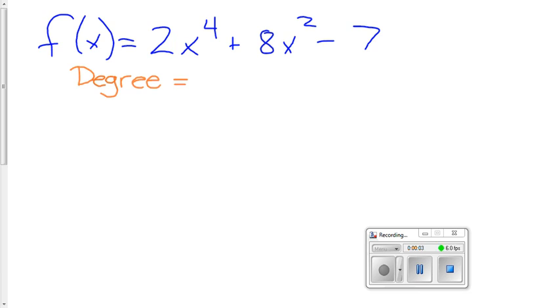Section 2.5 deals with finding roots that are both real and imaginary. Here we have a polynomial function, 2x to the 4th plus 8x squared minus 7.